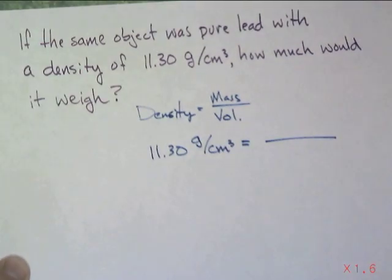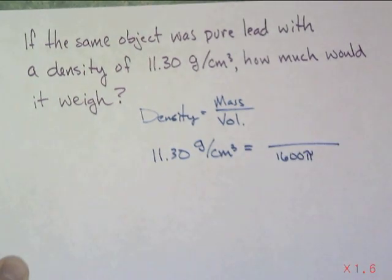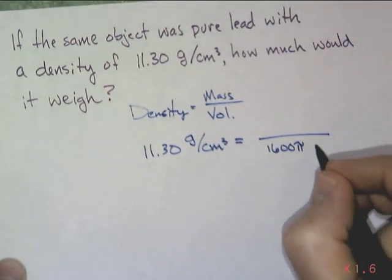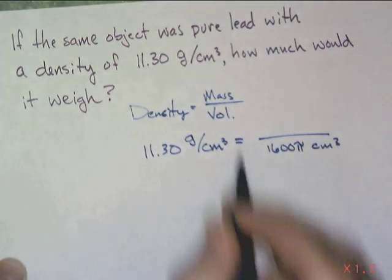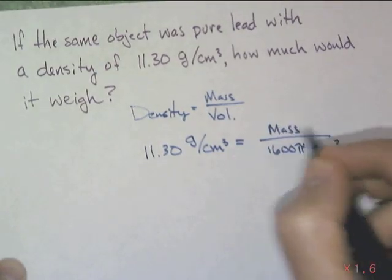So what am I going to put over here? I just figured out volume was 1,600π. Notice I'm putting in the exact—I'm not rounding yet—centimeters cubed. Fantastic. The mass, that's what I'm looking for.